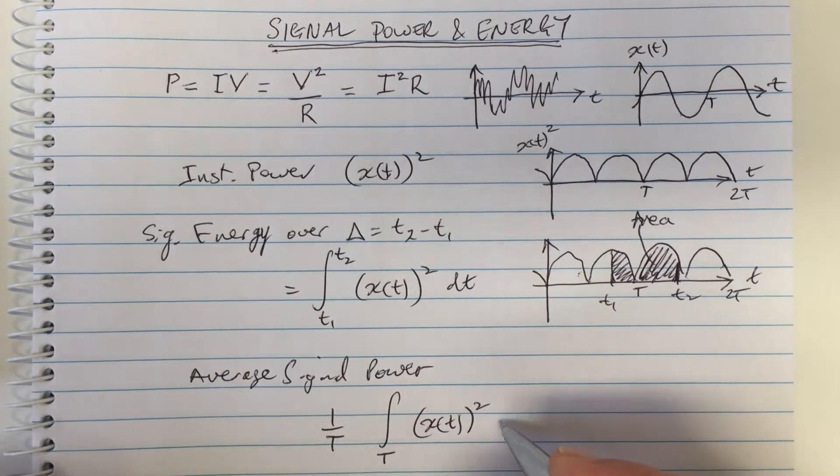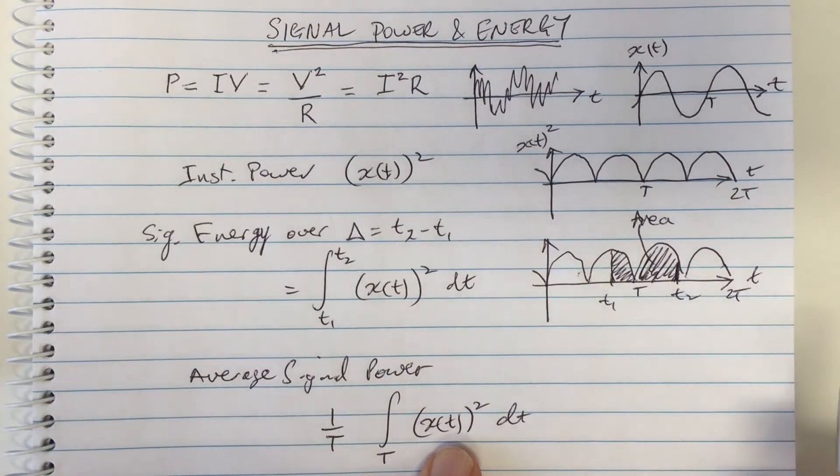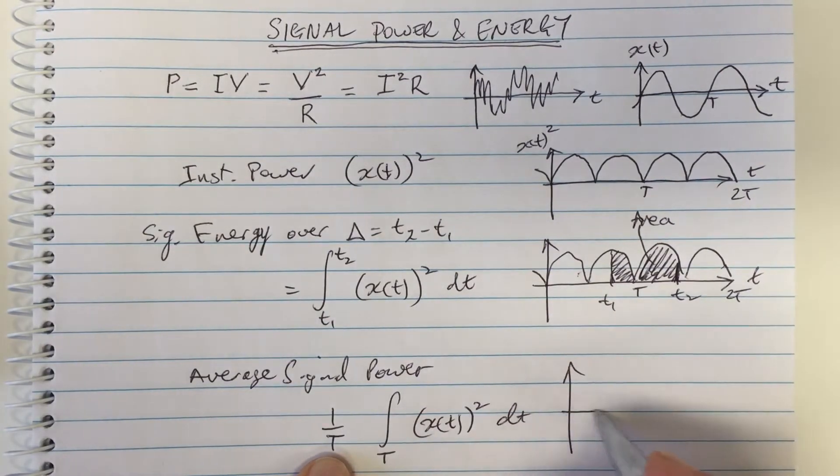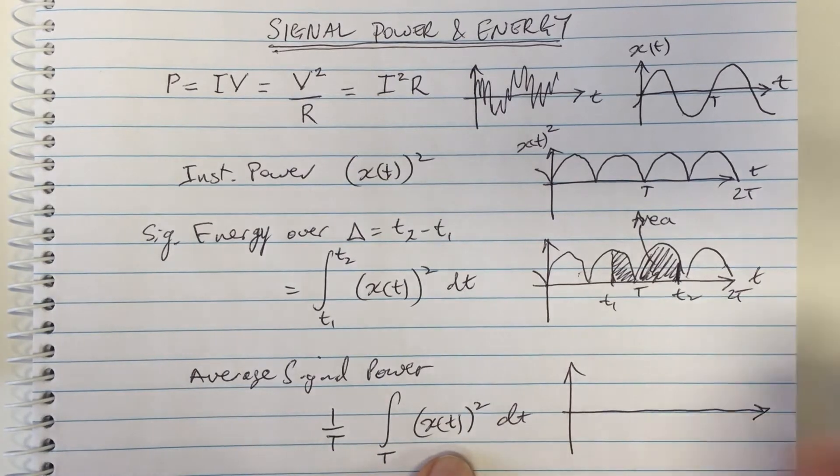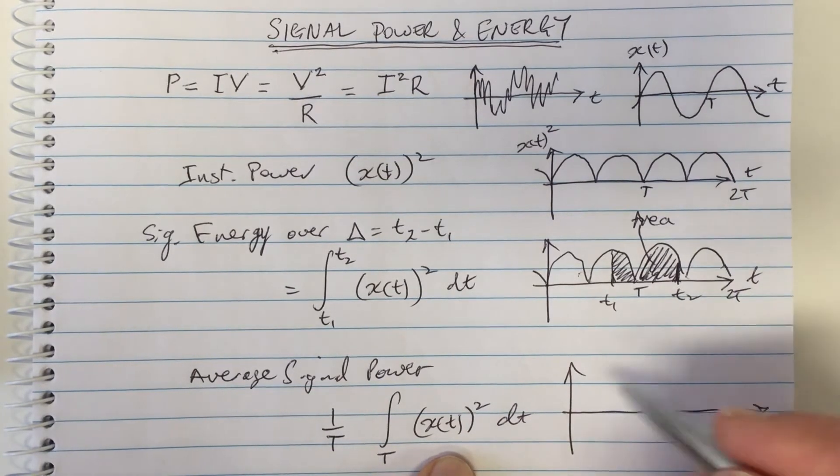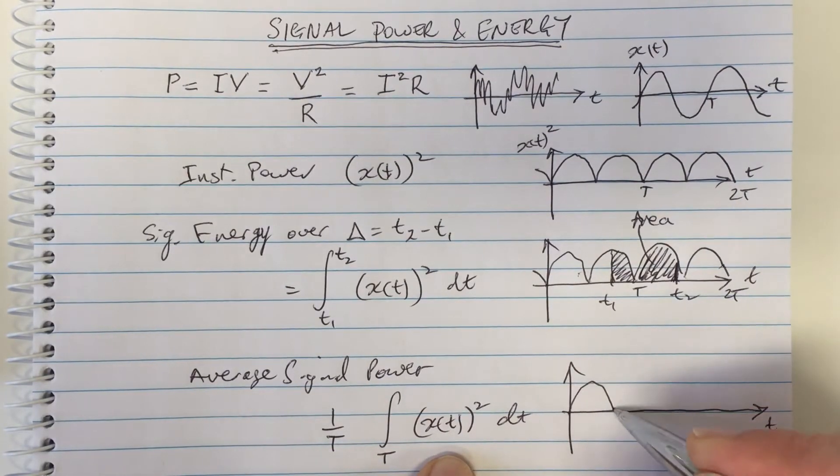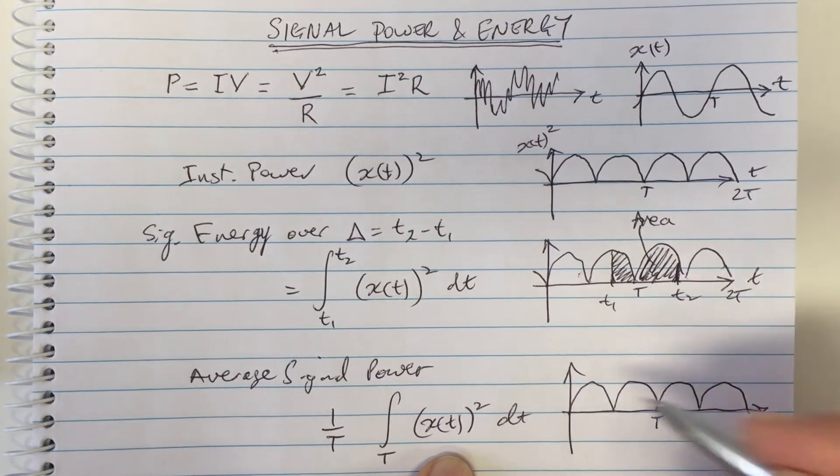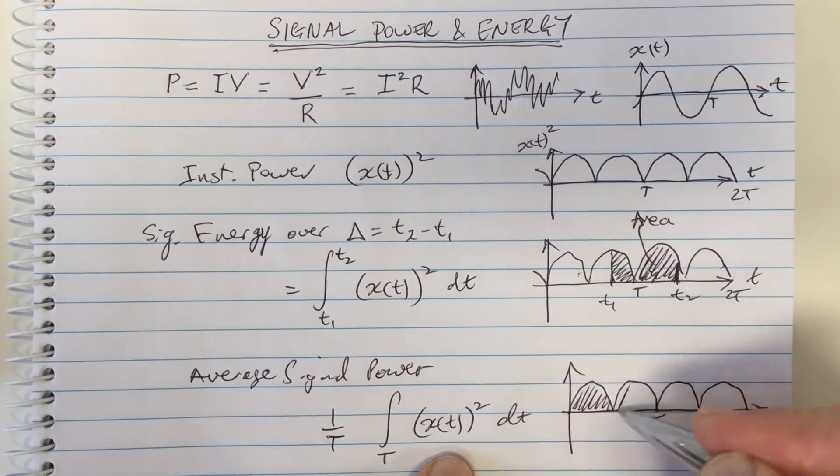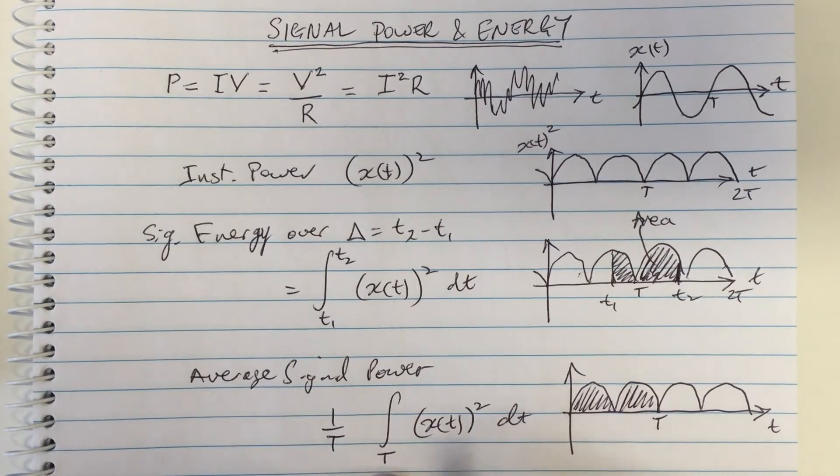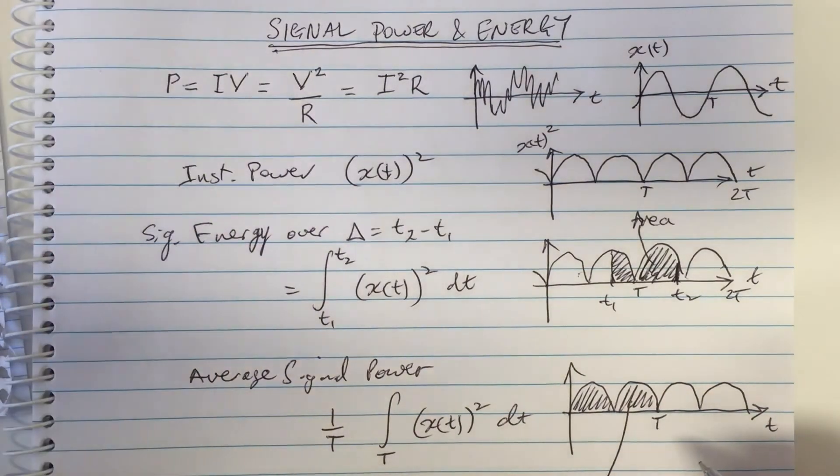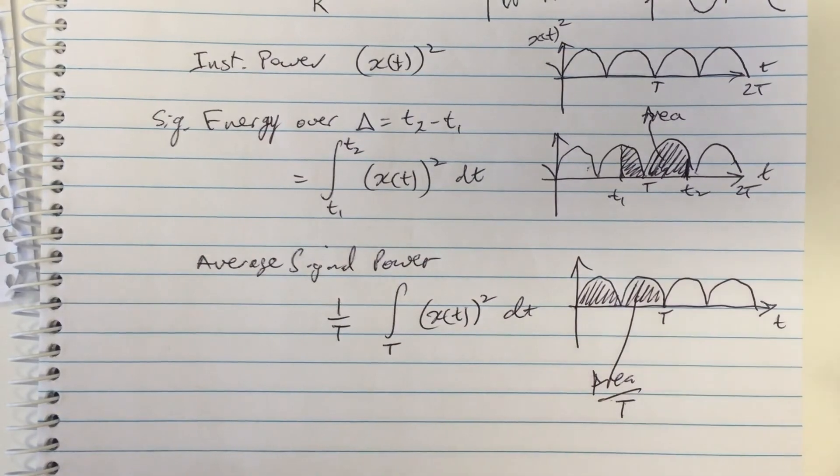Okay, so you add up the energy over a period, which is the area over a complete period, and divide by that period. And so for a signal which has infinite power, if it's periodic, we actually talk more in terms of the average power. So here's one period. That's the area of the power over the period. And we take that area, and we divide by the period.